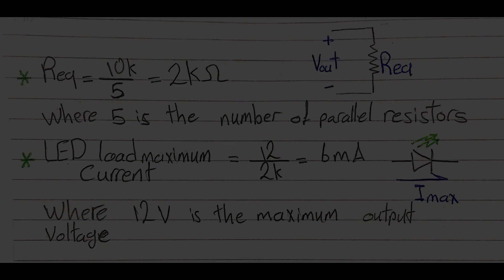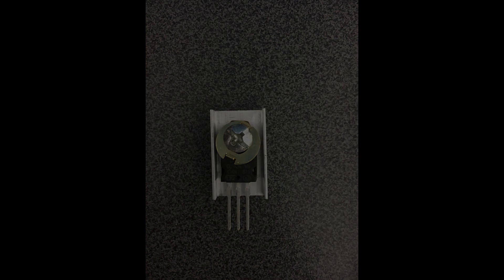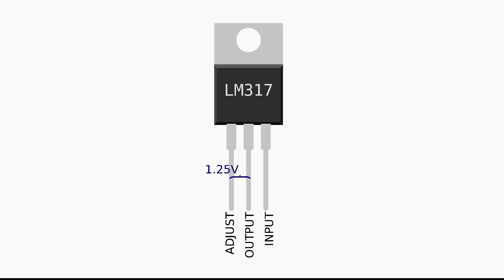Before starting constructing the circuit on a breadboard, make sure to put a heat sink on your LM317 so it doesn't melt your breadboard. The reason for that is the LM317 is a linear voltage regulator, and the power dissipated into heat in the LM317 can be found from this formula.